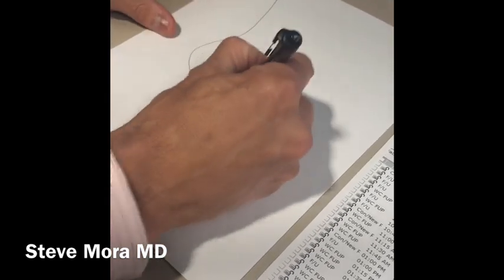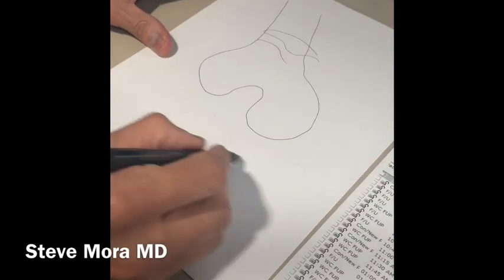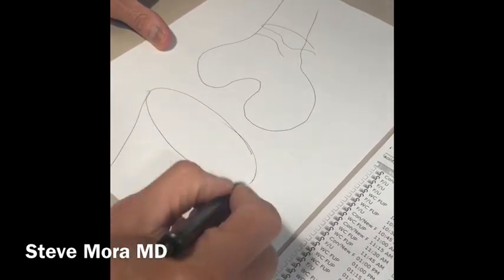We're going to draw a femur, and then there's a patella, and then we're going to draw the plateau, the tibia, like this.